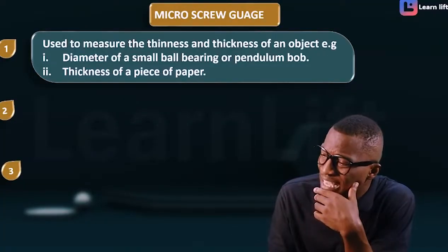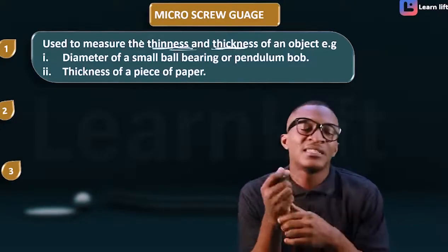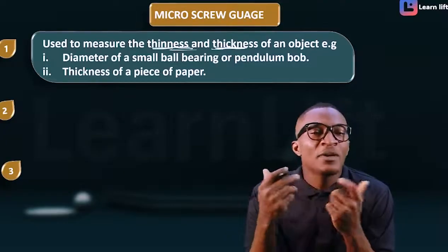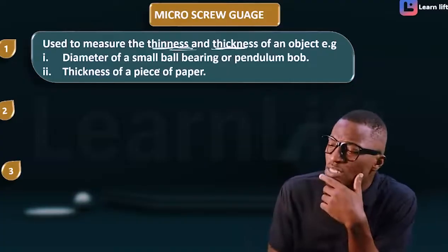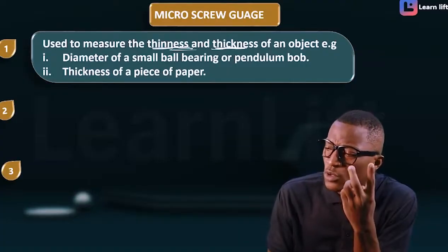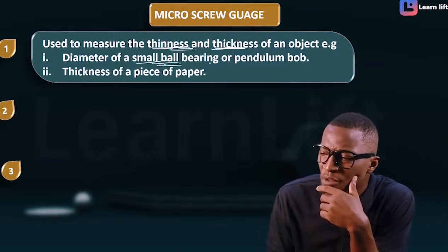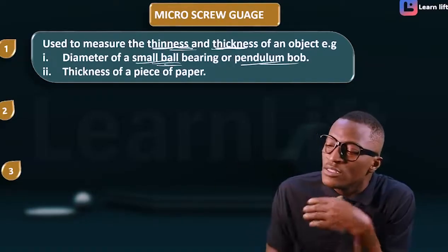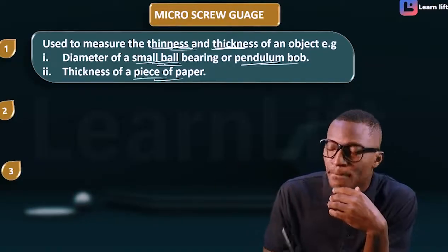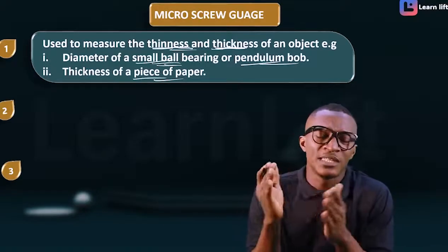Number one: the micrometer screw gauge is used to measure the thickness and thinness of an object. A common exam question is that it is used to measure the diameter of a small bearing ball, a small pendulum ball, and the thickness of a paper.